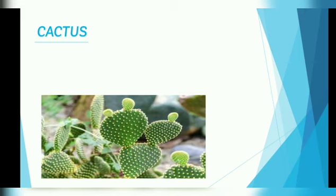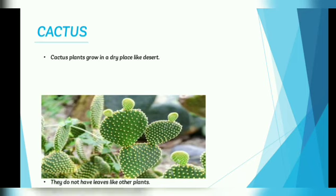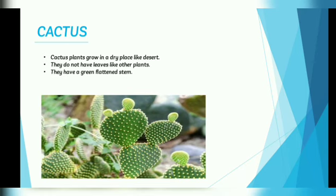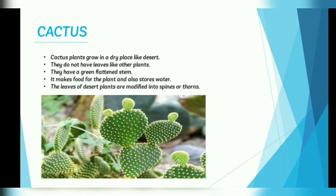Next is cactus. Cactus plants grow in dry places like deserts. They do not have leaves like other plants. They have a green flattened stem which makes food for the plant and also stores water. The leaves of desert plants are modified into spines or thorns.